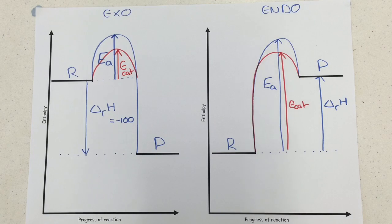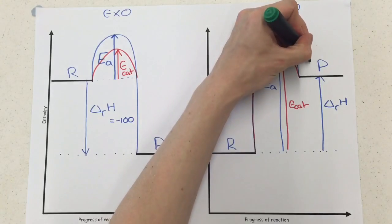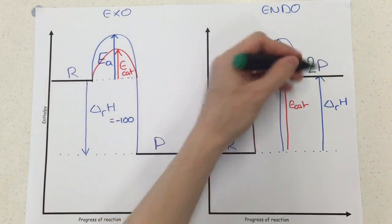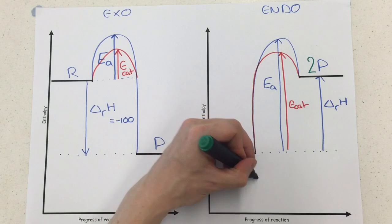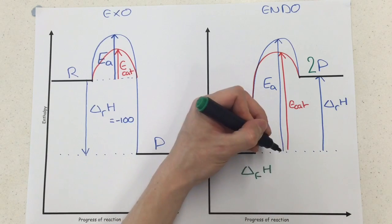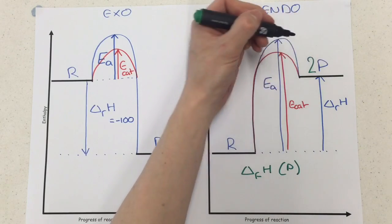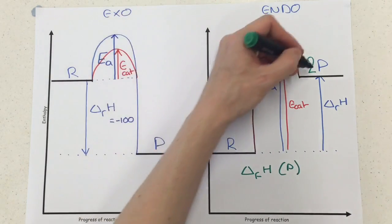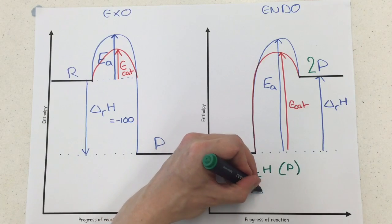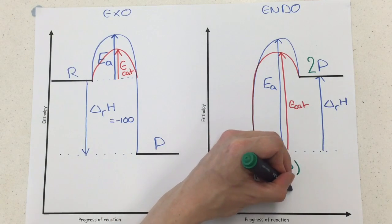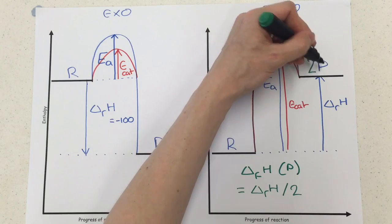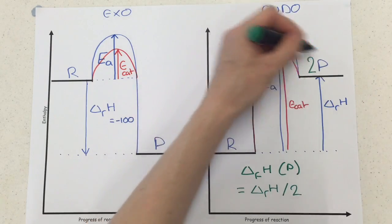I hope that clears up some of the work. Exam questions tend to stick to one of these two but they also tend to ask you about numbers. So for instance what they could do is on this one here you could have two of a certain product and it could be the only product there, and they could say what's the enthalpy change of formation for P? Well the enthalpy change of formation is the formation of one mole of P from its elements under standard conditions, and so since two are made here all you'd have to do is take the enthalpy change and divide it by two to find out what the enthalpy change for making one mole of P would be from this actual diagram.